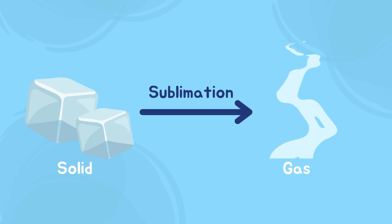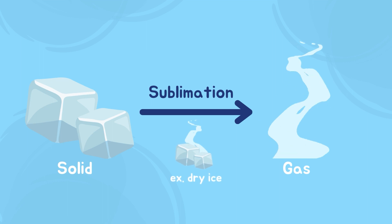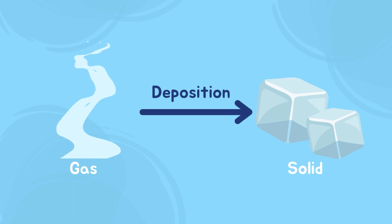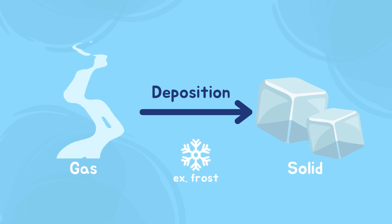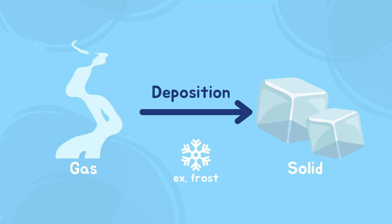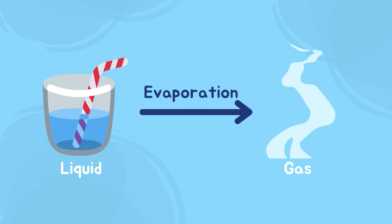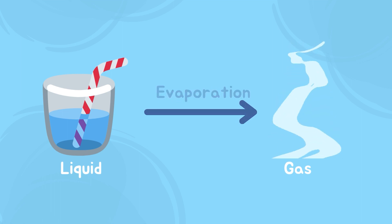The process of a solid changing to a gas is called sublimation. An example of sublimation is when dry ice melts and turns into gas vapors. The process of changing from a gas state to a solid state is called deposition. We often see this in the form of frost, when water vapor turns into frost because of the cold weather. The process of changing from a liquid state to a gaseous state is called evaporation. The liquid is usually heated or exposed to warm temperatures to start the evaporation process.